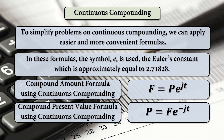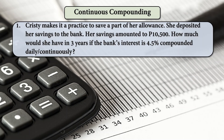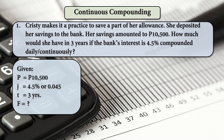The compound present value formula using continuous compounding is: P equals F times E raised to negative J times T. Going back to our earlier example, we will use the shortcut formula.